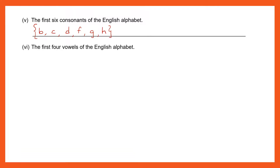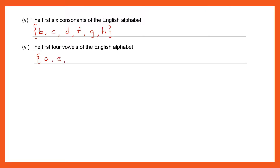Question 6: Write the first four vowels of the English alphabet. So we start with curly brackets and write: {A, E, I, O}. We are asked to write only the first four vowels of the English alphabet.